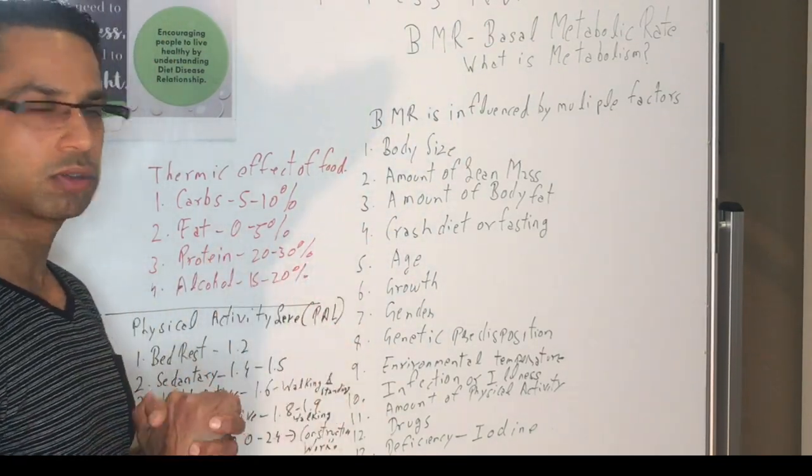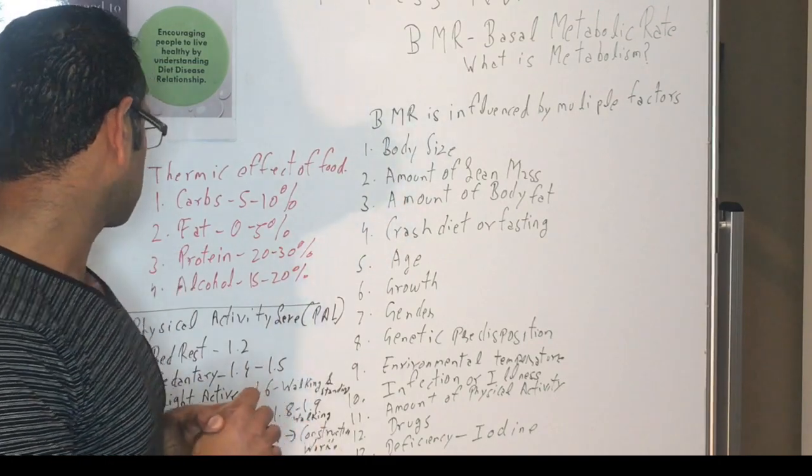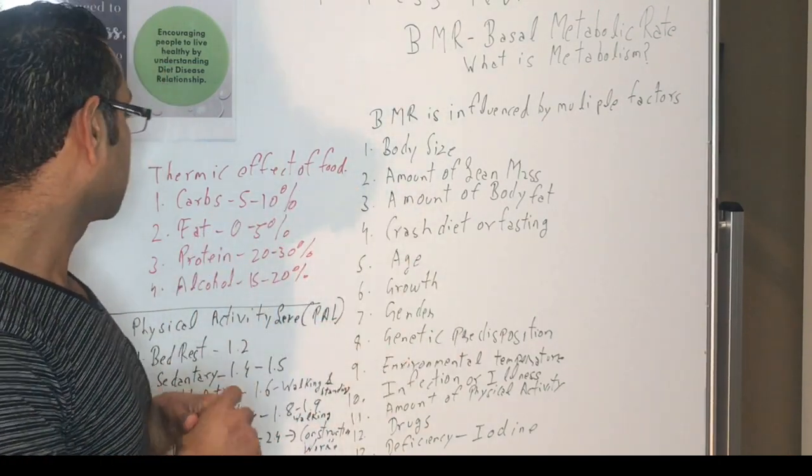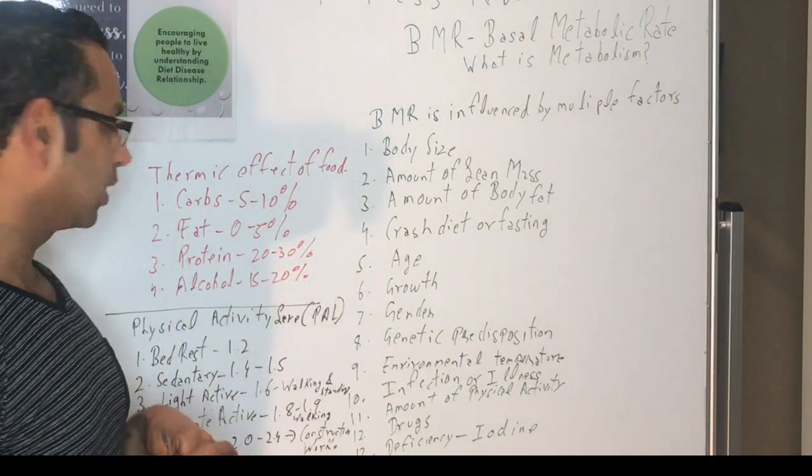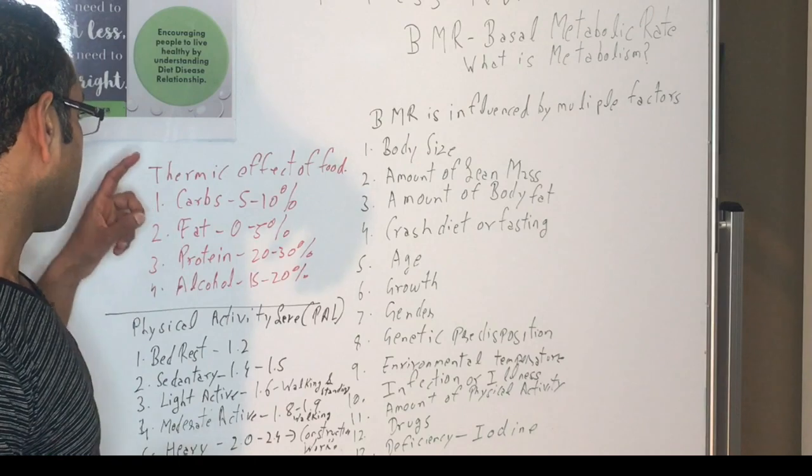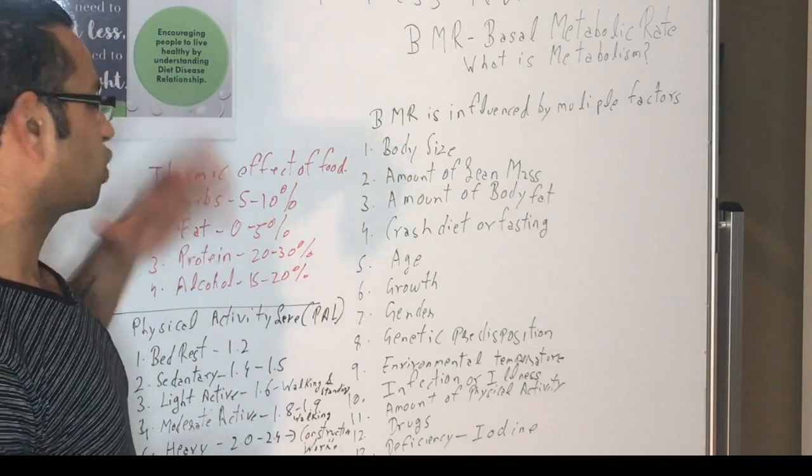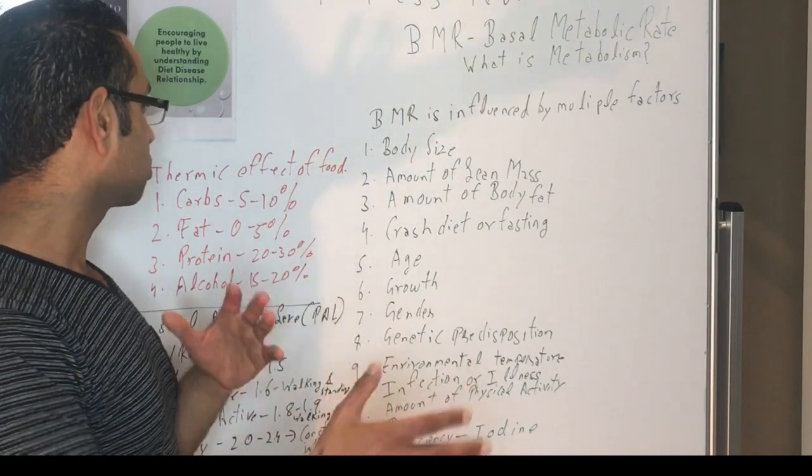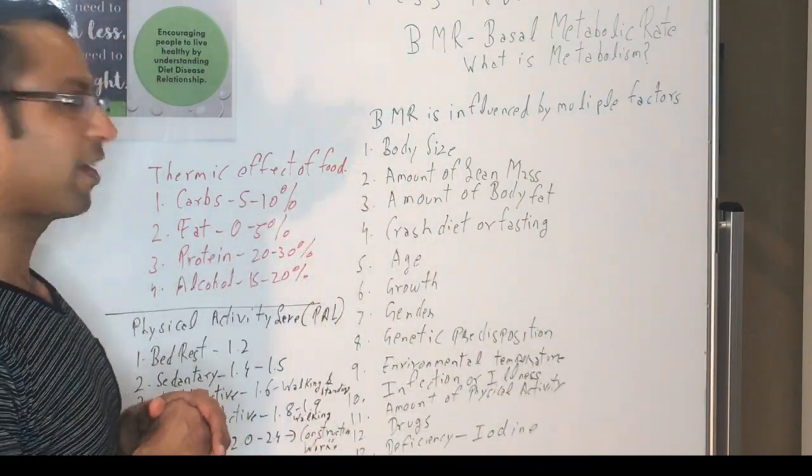Protein is 20 to 30 percent. So as you can see, protein could have a high thermic effect, and that's the reason some bodybuilders try to eat more protein. And alcohol is around 15 to 20 percent. But the way it only works out, rather than just considering individual, is that 10 percent of your calories goes towards the thermic effect of food.